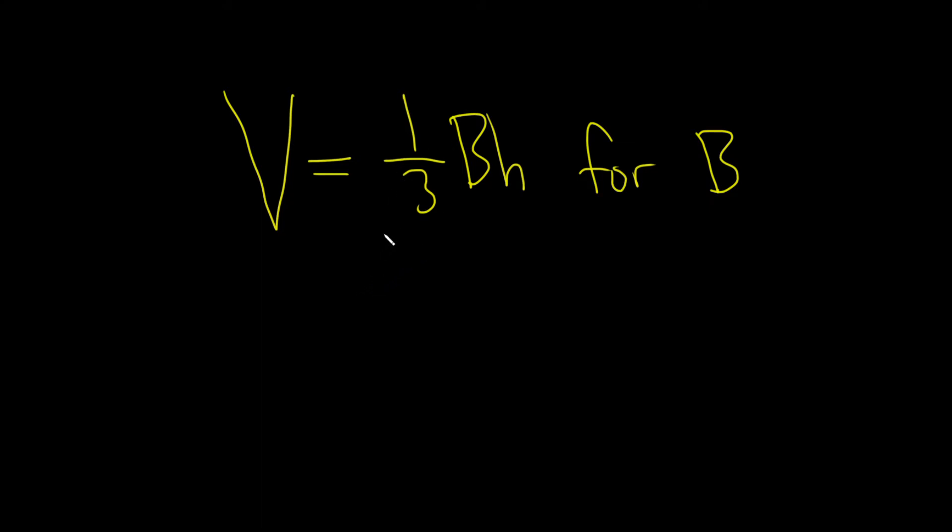Let's first get rid of this one-third. So to get rid of the one-third, we can just multiply both sides by 3 like this. So I'll put a 3 here, and I'll put a 3 here.